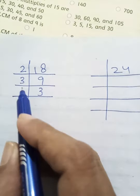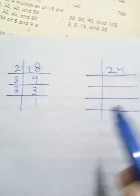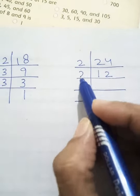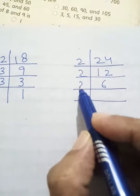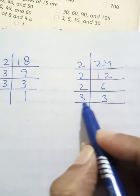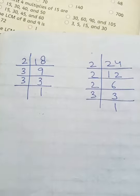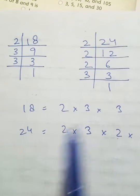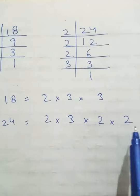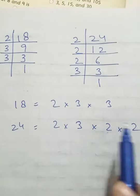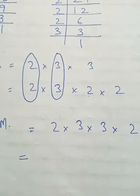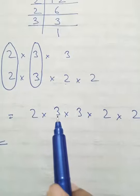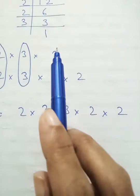18 के लिए: 3 threes are 9, then 3 ones are 3. 24 भी even number है, 2 से start करेंगे: 2 ones are 2, 2 twos are 4, then 2 sixes are 12, then 2 threes are 6, and 3 ones are 3. 18 के factors: 2, 3, 3. 24 के factors: 2, 2, 2, 3. Common को circle कर लीजे।